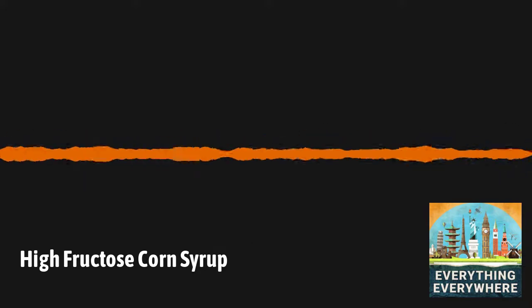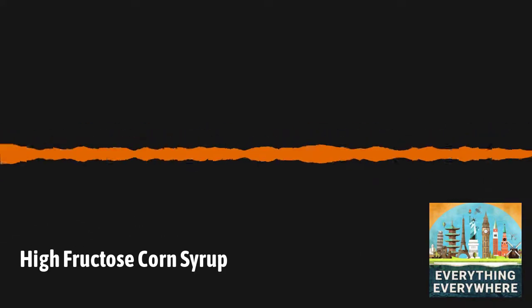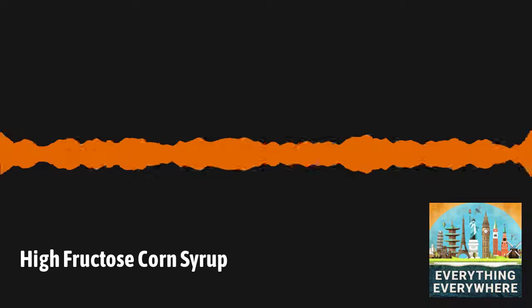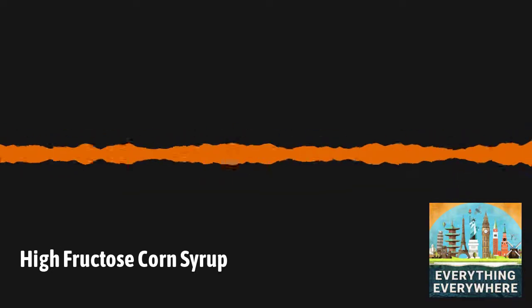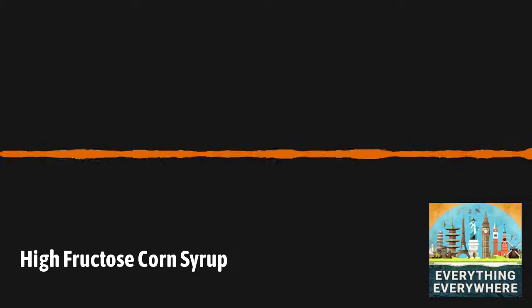High fructose corn syrup is not the same as corn syrup. Corn syrup, the kind that you might buy in a store, is thicker and is a mixture of many different types of sugars. High fructose corn syrup is made from corn syrup, which is made from corn starch. It's created from enzymes that break up the corn syrup into pure fructose.